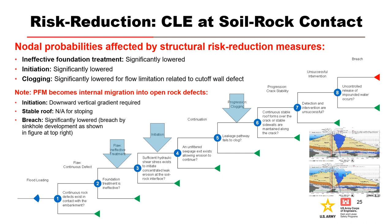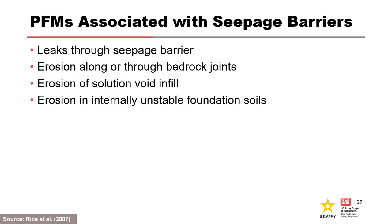Installation of structural risk reduction measures like cutoff walls can also introduce new potential failure modes as the flow regime is changed. This presentation discusses the first three potential failure modes: leaks through seepage barriers, erosion along or through bedrock joints, and erosion of solution void infill.